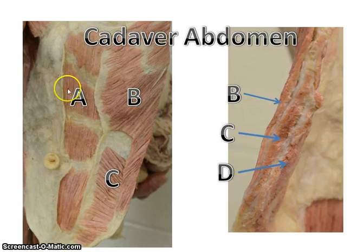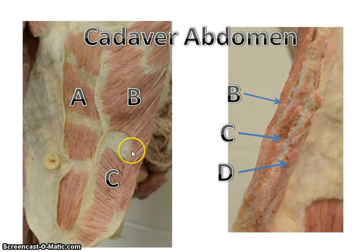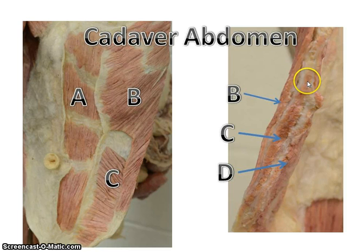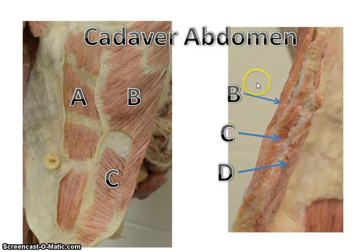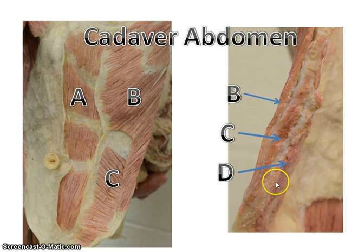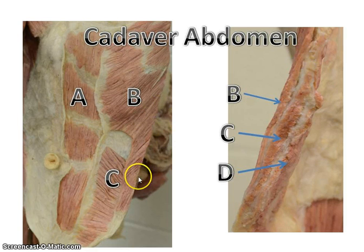Here's your rectus abdominis. Here is your external oblique. Here they've cut off the superficial layer and you can see the internal oblique. And then if you look closely at the cadaver, where the chest cavity is pulled open and we're looking right in here, you can see the different layers — the external obliques, the internal obliques, and then you can actually see the transversus abdominis in this layer. To see this you have to come and look at this open chest cavity and look right in here in order to see those layers.